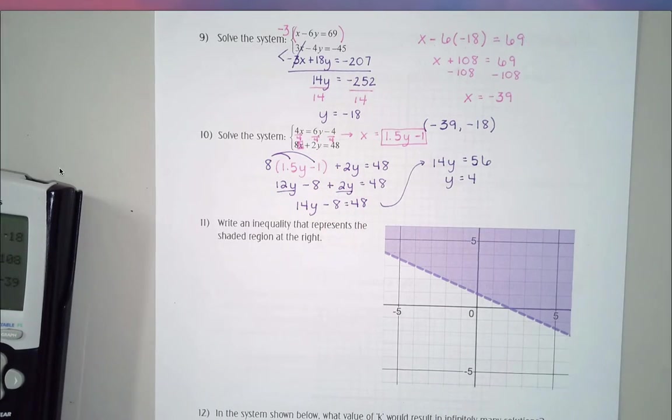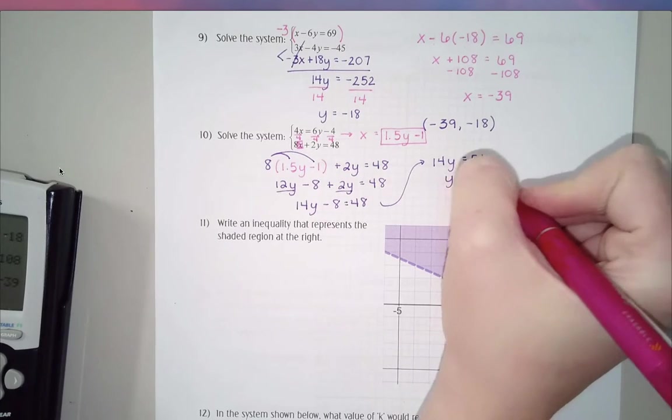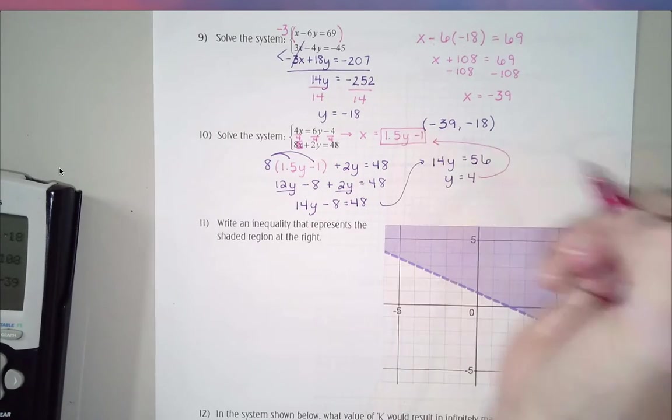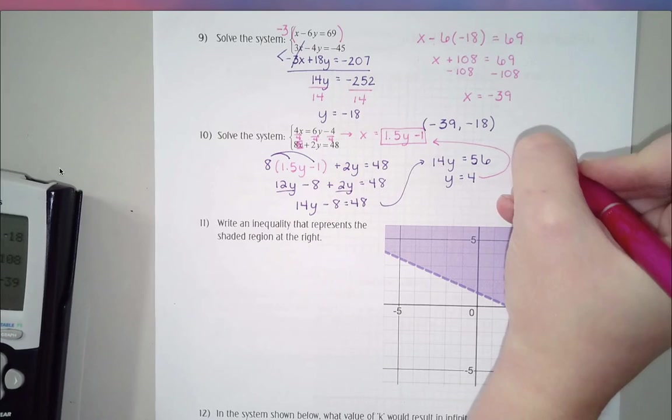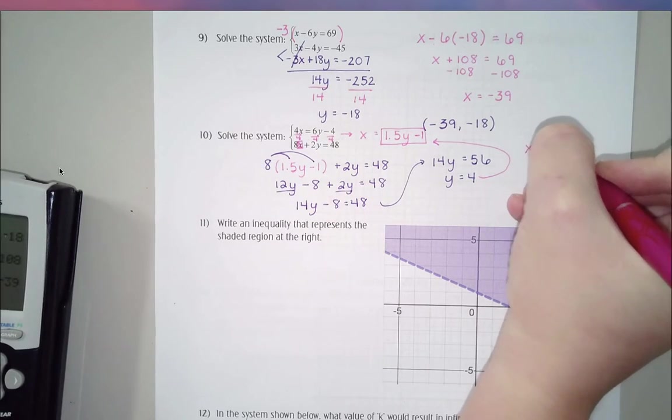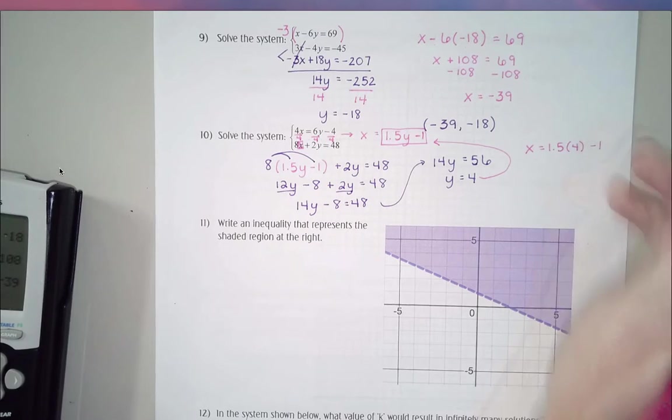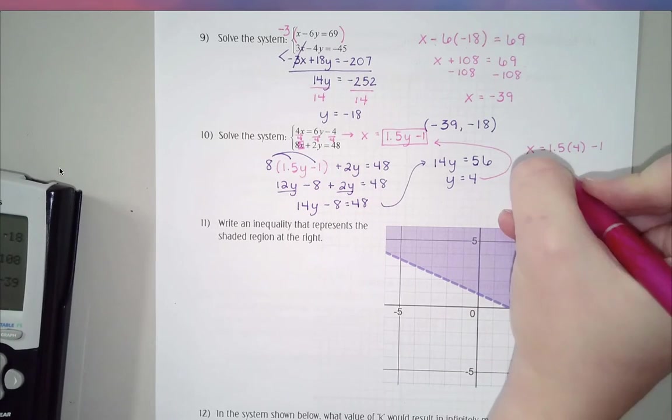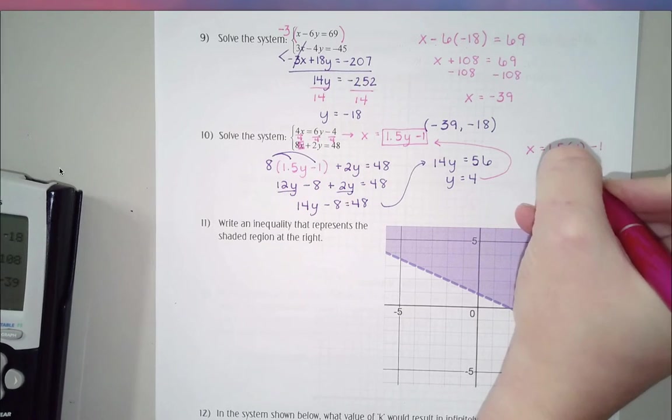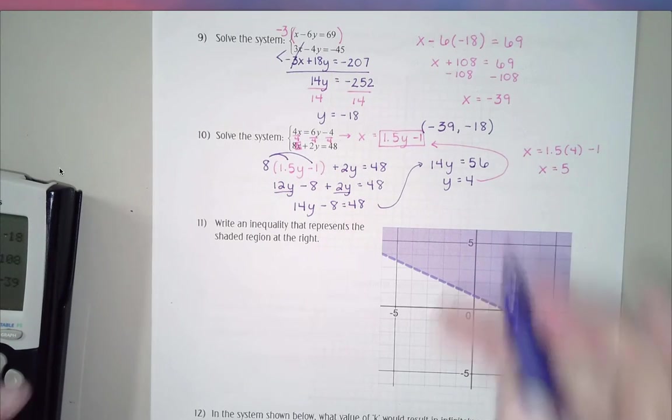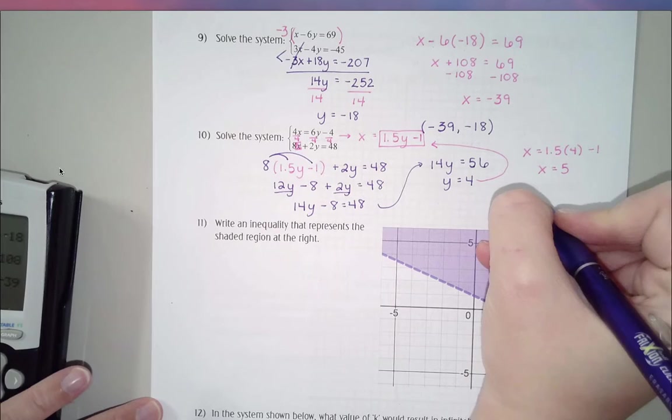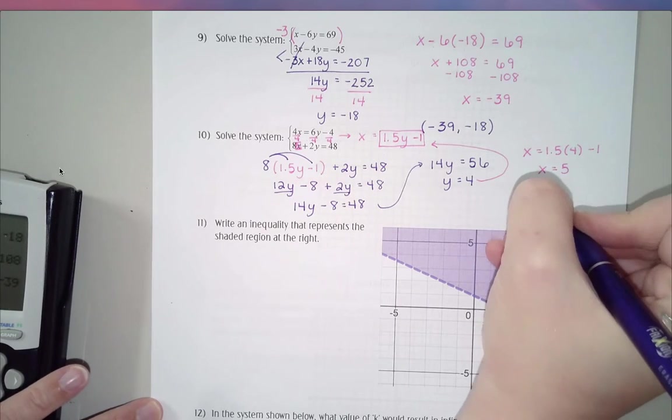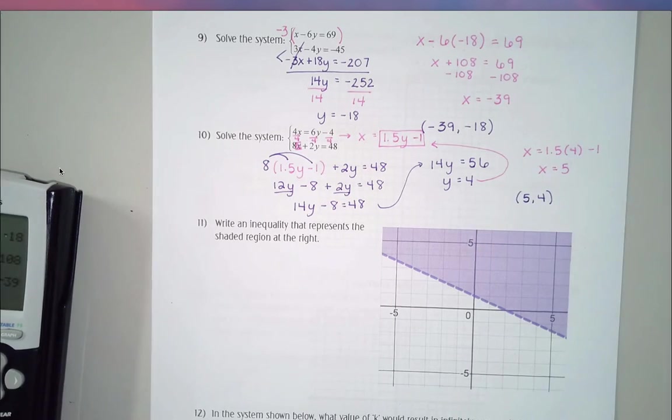Let's put the 12y and the 2y together. So I end up with 14y minus 8 equals 48. I'm going to add that 8 to the other side, so I end up with 14y equals 56. And then when I divide by 14, I end up with y equals 4. Now I'm going to take that y value and plug it back into my equation up here to find x. So x equals 1.5 times 4 minus 1. 1.5 times 4 is 6 and 6 minus 1 is 5. So then for my final coordinate here, I'm going to say 5 comma 4.